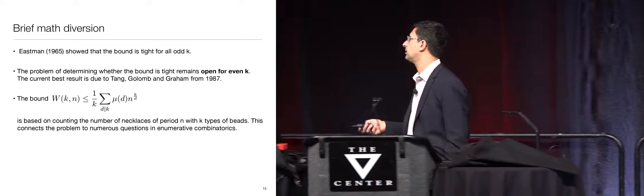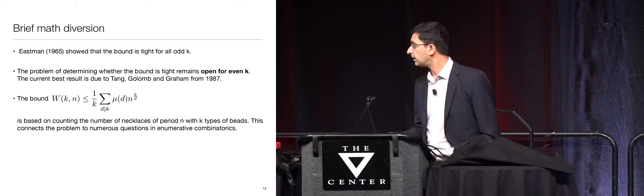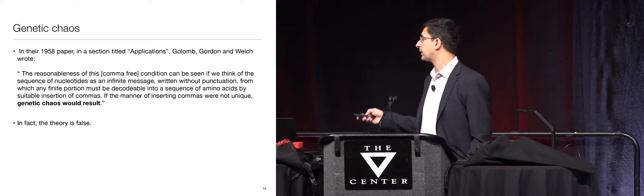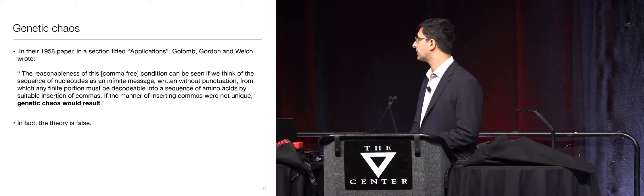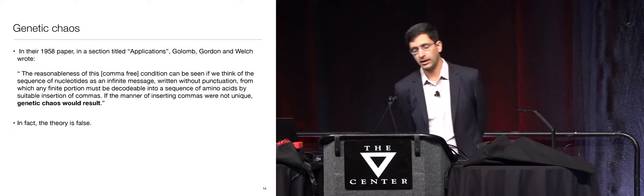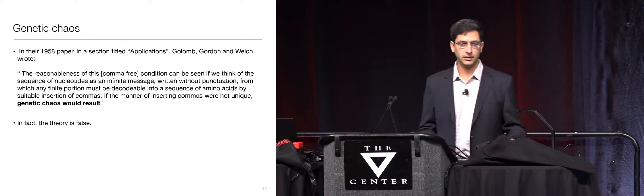Interestingly, there's already an unsolved problem associated with this code — for even K, not much is known about when the bound is tight, and people still work on this. Already in 1958, they chanced upon some interesting math. But the punchline is that although they were convinced this must be the right answer — and there's a paragraph in the paper saying if this is not the explanation there would be 'genetic chaos' — they were completely wrong. Their theory has nothing to do with reality. The idea of tinkering with simplistic models and arriving at the right answer turned out to be a fairly short-lived exercise in biology.